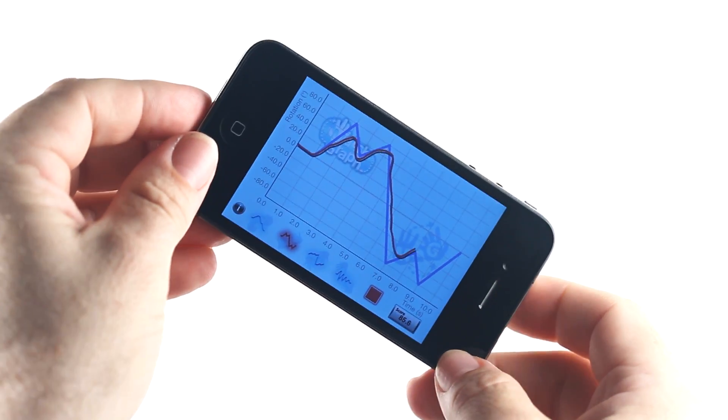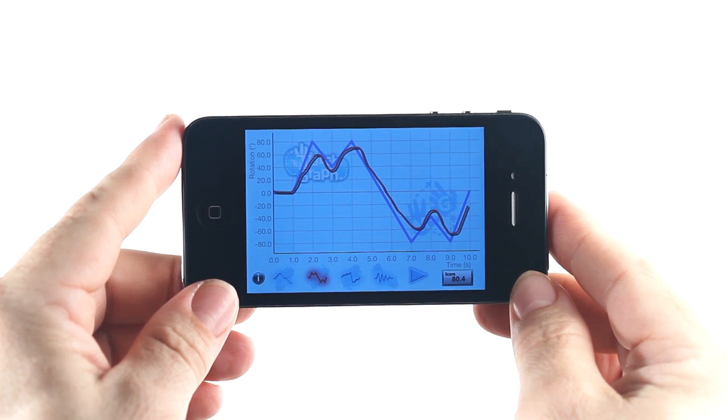The slope of the line on the screen is controlled by the rate of rotation. To keep up with the steeper lines, you'll need to make faster rotations.